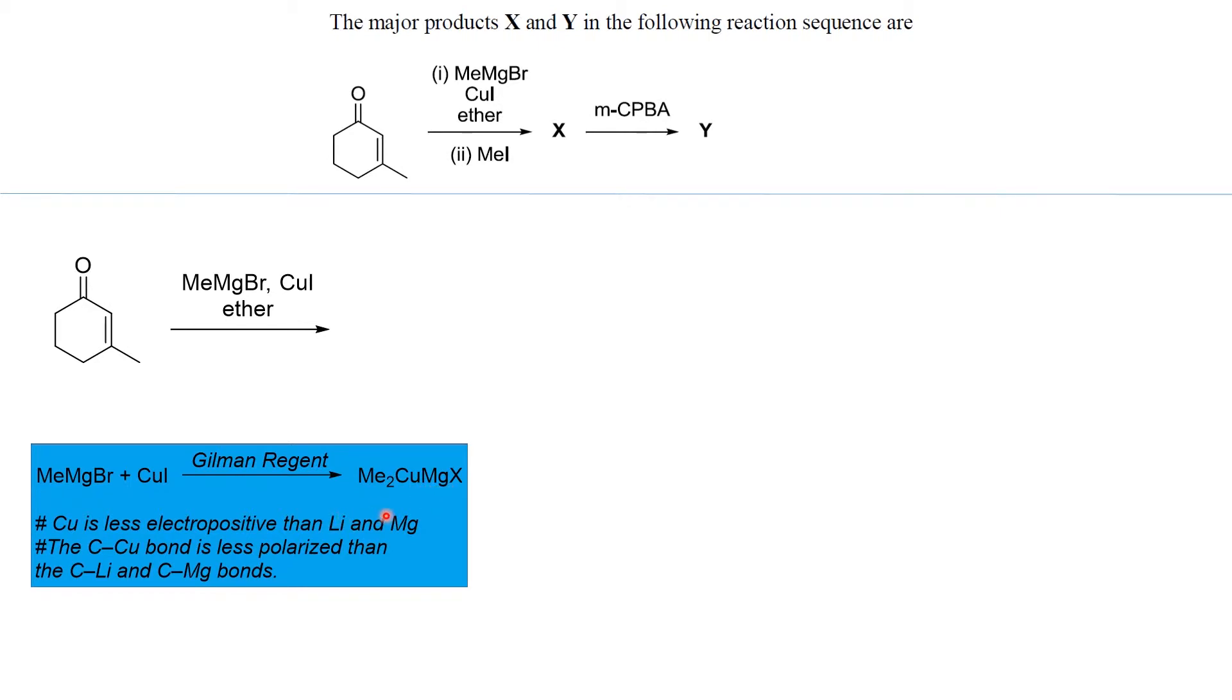Here organocuprates, whether it's copper magnesium or copper lithium, are called Gilman reagents. Now, copper is less electropositive than lithium and magnesium, which means the C-Cu bond is less polarized than C-Li and C-Mg bonds. Less polarized means these bonds have more covalent character.